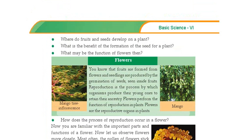Here you can see some questions and you know the answers. The first question: where do fruits and seeds develop on a plant? Yes — on the flower. Only after flowering, fruits and seeds are formed. The second question: what is the benefit of the formation of a seed for a plant? We use that seed for producing the next generation — a new plant.